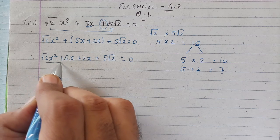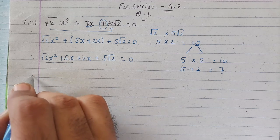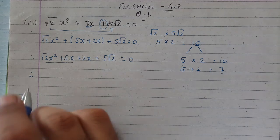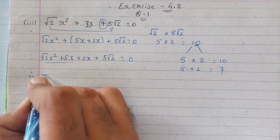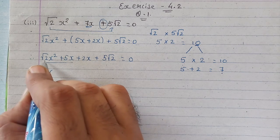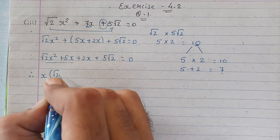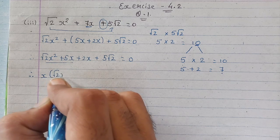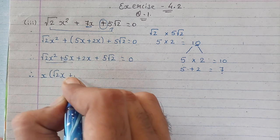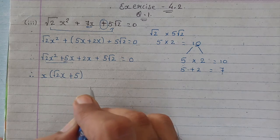Now what will we do? From these two terms we can first take x as common. Nothing else can be taken as common, only x is there which will come as common. Let's take x as common. By taking x as common, inside the bracket we will have under root 2. From x square, x came out as common, so x remains. And from here we took x as common, so what remains? Only 5 remains.